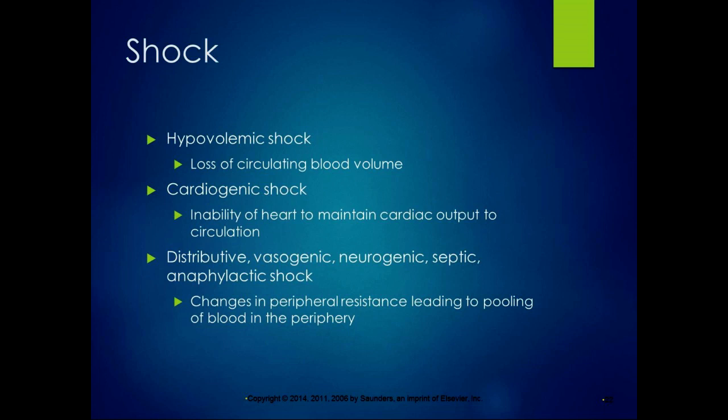There's also distributive, vasogenic, neurogenic, septic, and anaphylactic shock — we talked about anaphylactic shock in the immune system chapter. All of those cause changes in peripheral resistance that lead to pooling of blood in the periphery, so you still get that inadequate circulation of oxygen. The key thing in shock — if asked on a quiz — the right answer is that it's inadequate perfusion of oxygenated blood, whatever the cause.